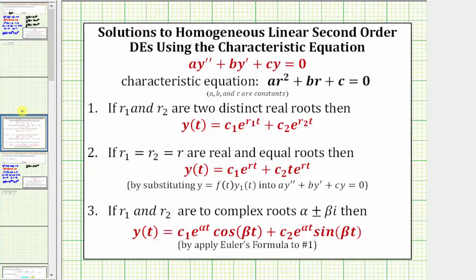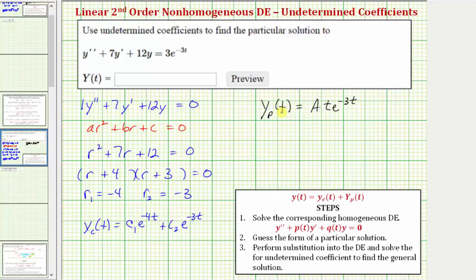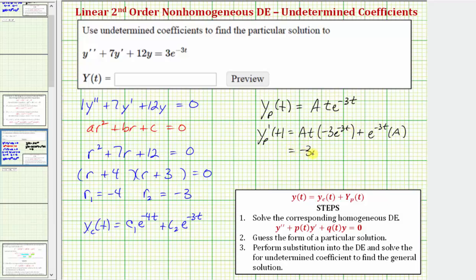This should remind us of solving a homogeneous differential equation using a characteristic equation when we had two equal roots — notice how the second term had an extra factor of t. Before we perform substitution into the original differential equation to find the value of a, we need to find the first and second derivatives of y sub p of t. The first derivative requires the product rule: the first function at times the derivative of e to the negative 3t, which is negative 3 e to the negative 3t, plus e to the negative 3t times the derivative of at, which is a. Simplifying, the first derivative is negative 3at e to the negative 3t plus a e to the negative 3t.